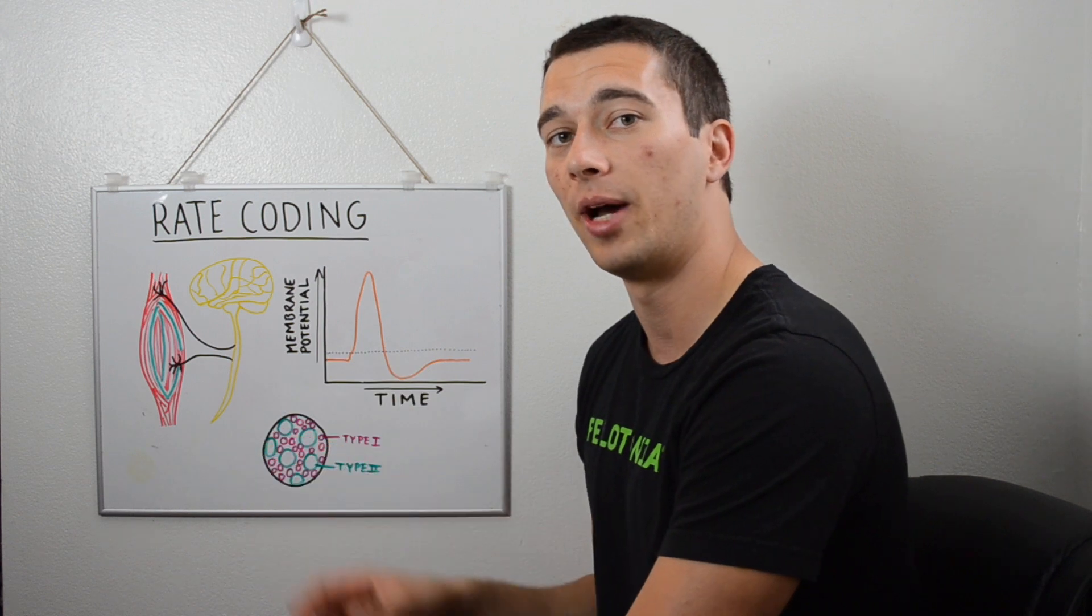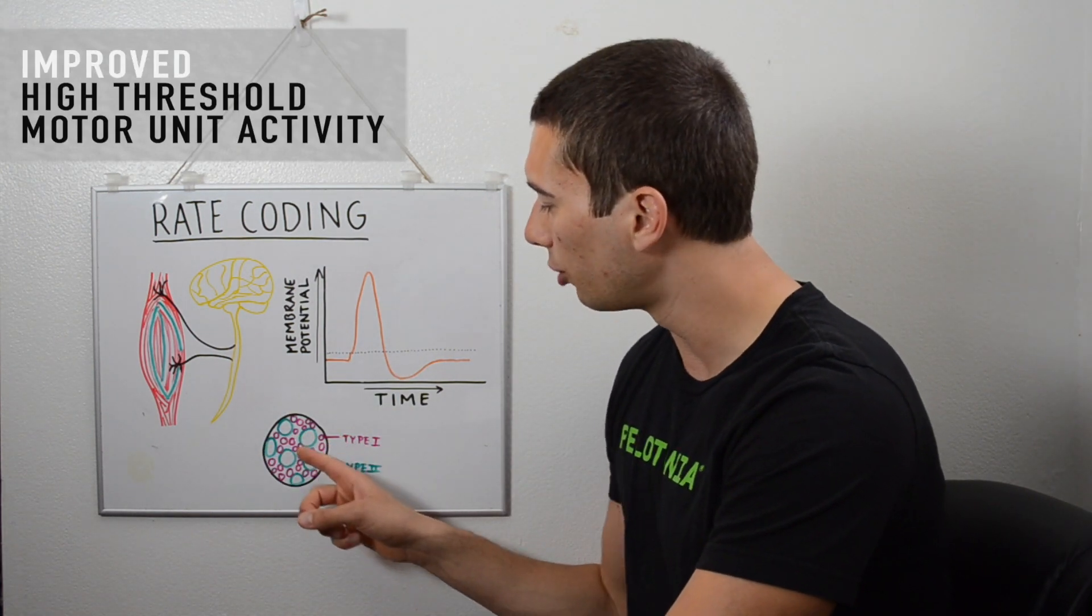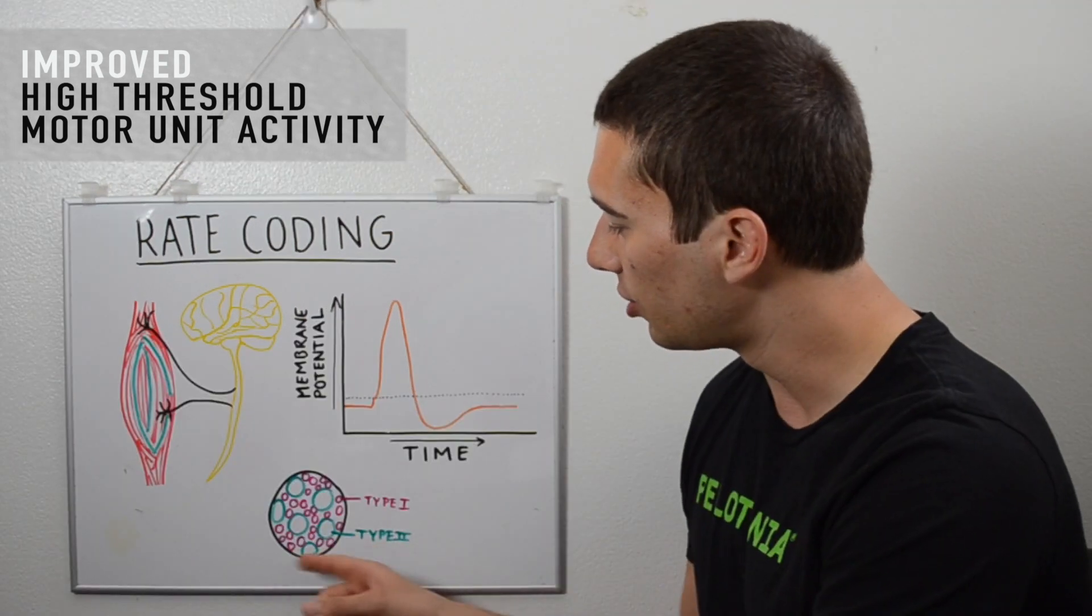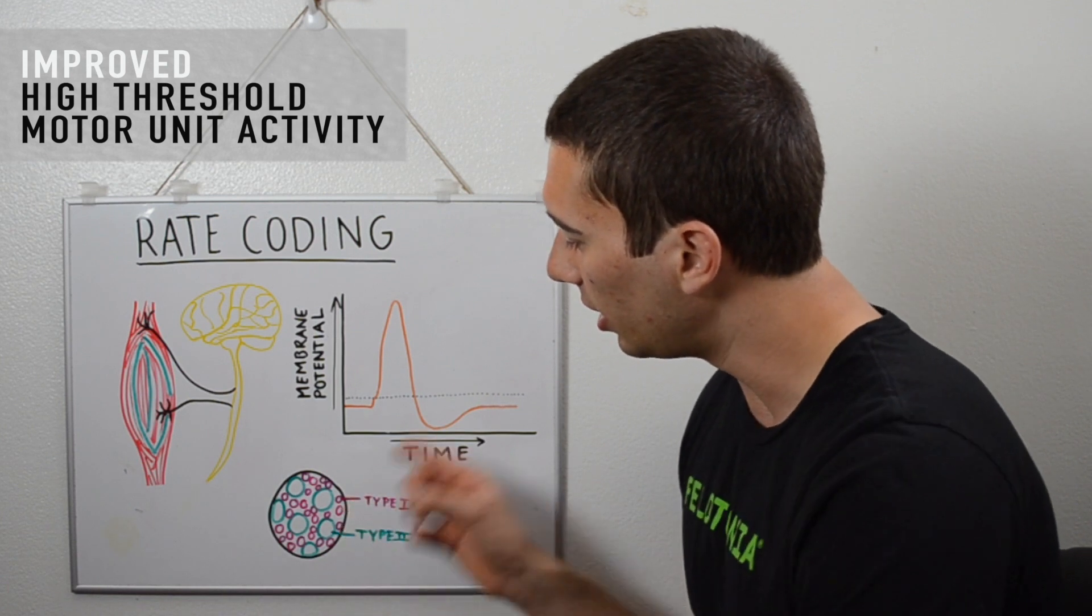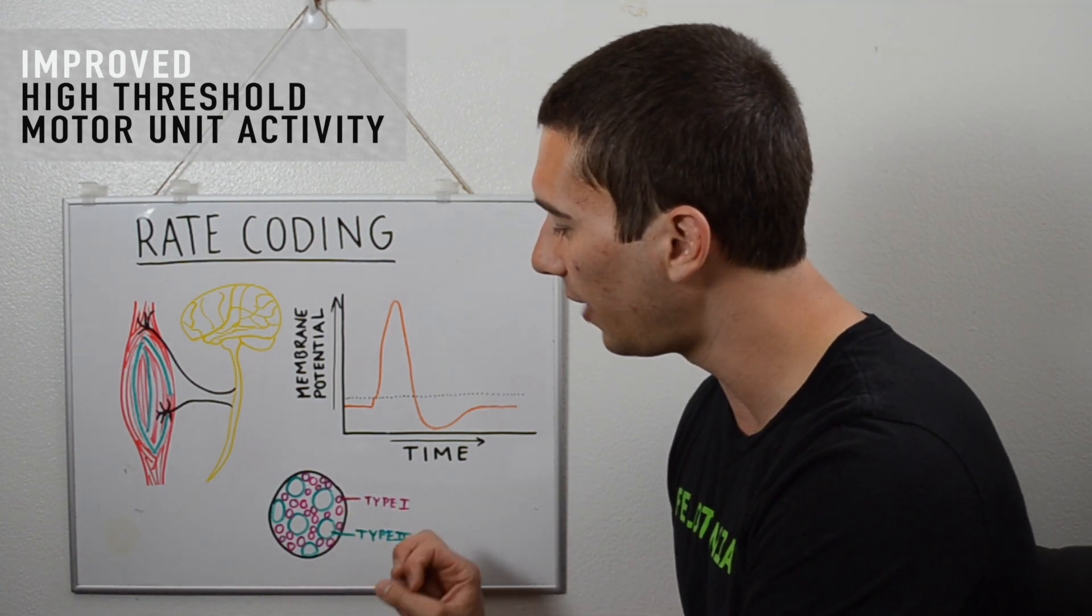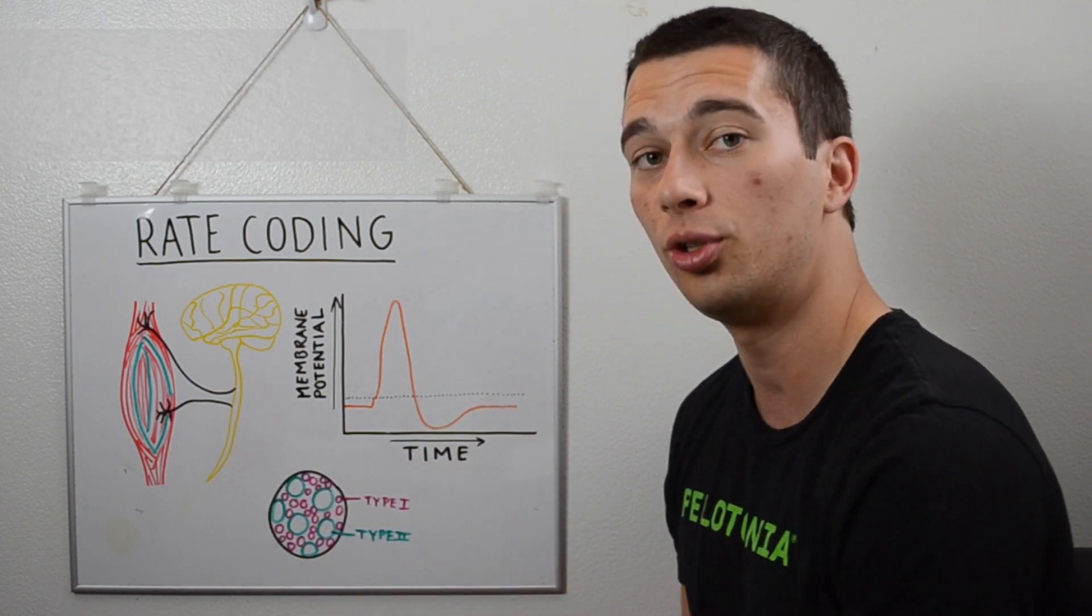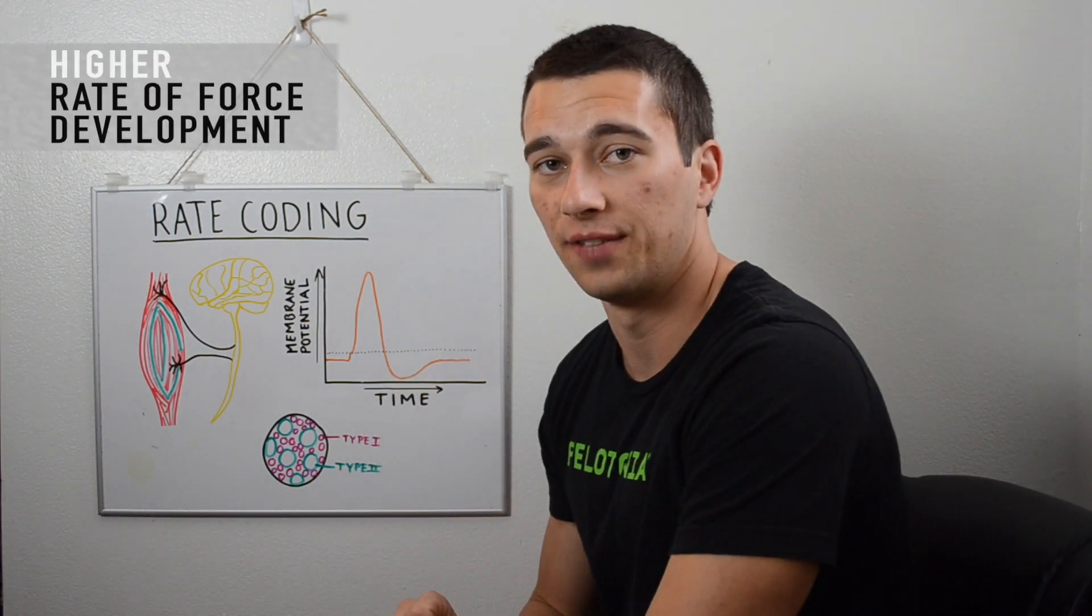We can also have improved motor unit activity of higher threshold motor units, meaning that if we train the type 2 muscle fibers, so this is a muscle fiber cross section right here, we can recruit those type 2 muscle fibers more efficiently, get the signal from the brain to these more efficiently and improve that. And this can all result in higher rate of force development.